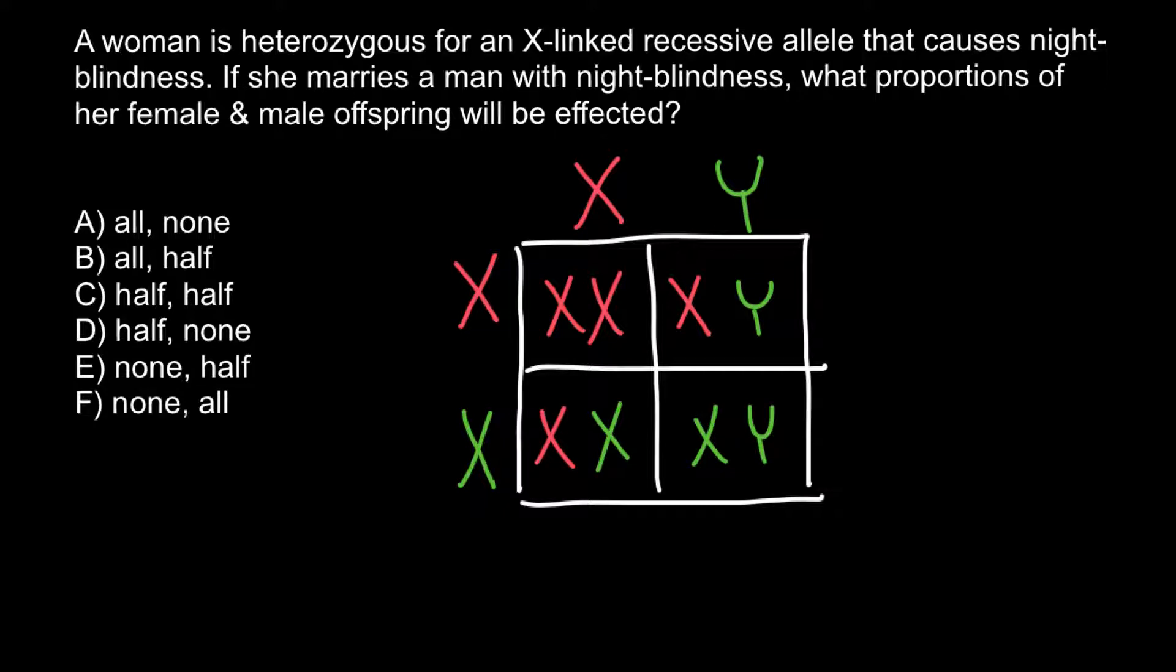50% of the females would be carriers but phenotypically normal, and 50% of the females would be affected with this genetic disorder. 50% of the males would be affected with this genetic disorder, and 50% of the males would be phenotypically and genotypically normal.